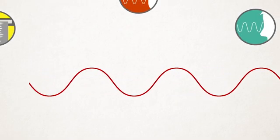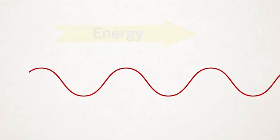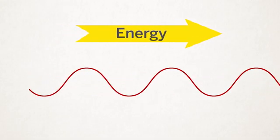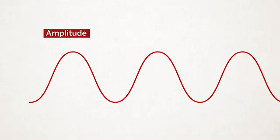Every wave can be represented by a pattern of peaks and valleys, and every kind of wave carries energy from one place to another. You can describe a wave by its amplitude, wavelength, and frequency.